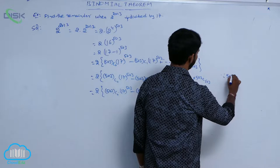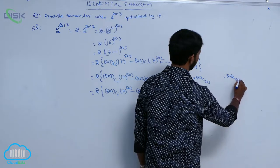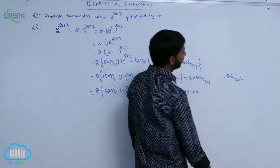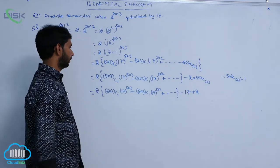Since 503C503 is equal to 1, the last term evaluates to (-1)^503 = -1.